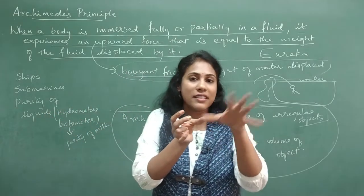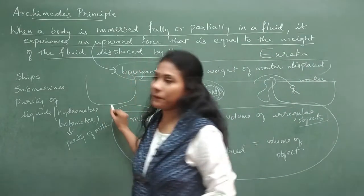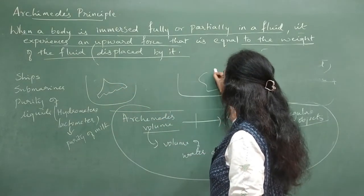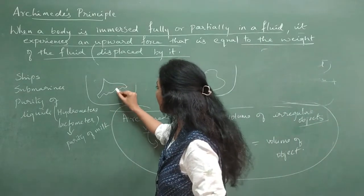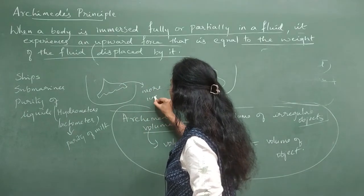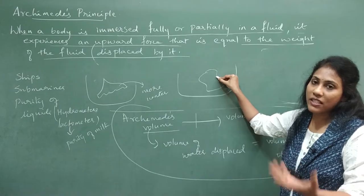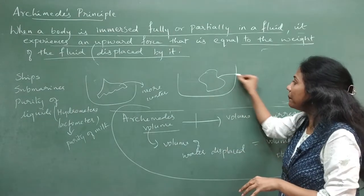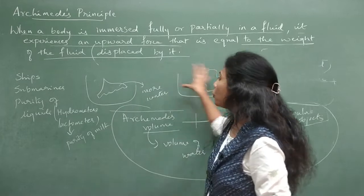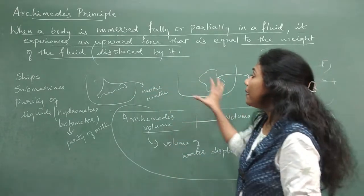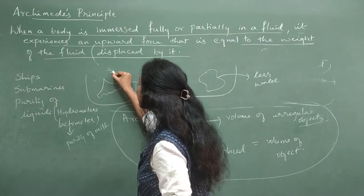He took the crown and also took the same amount of pure gold the king had originally given the goldsmith, then dipped both in water. When he dipped the crown, more water got spilled. When he dipped the same amount of pure gold, less water got spilled. If the crown were pure gold, the same amount of water should have spilled, but the crown spilled more — meaning the goldsmith had mixed in silver.